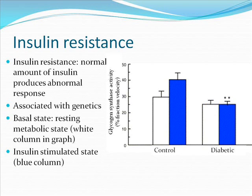Insulin resistance is a condition in which an abnormal amount of insulin produces abnormal natural responses. Insulin resistance is associated with genetics. Insulin resistance in type 2 diabetes has both primary genetic and secondary non-genetic factors. The secondary non-genetic component may be due to either a parental component associated with low birth weight, or different potential factors such as glucose or lipotoxicity.